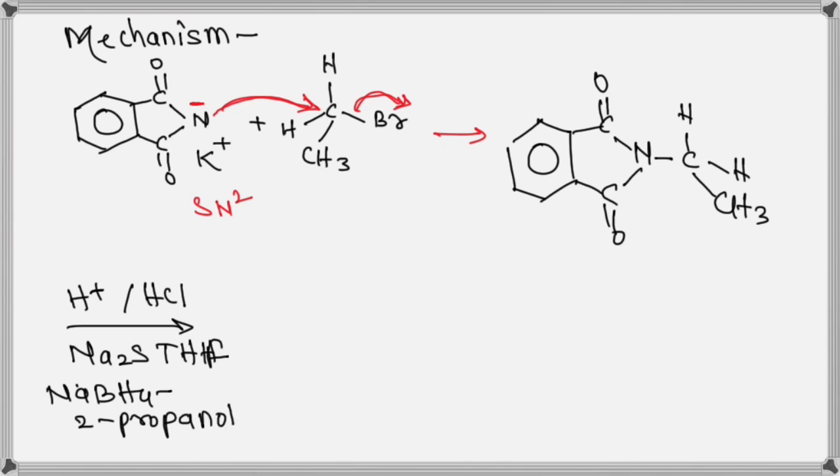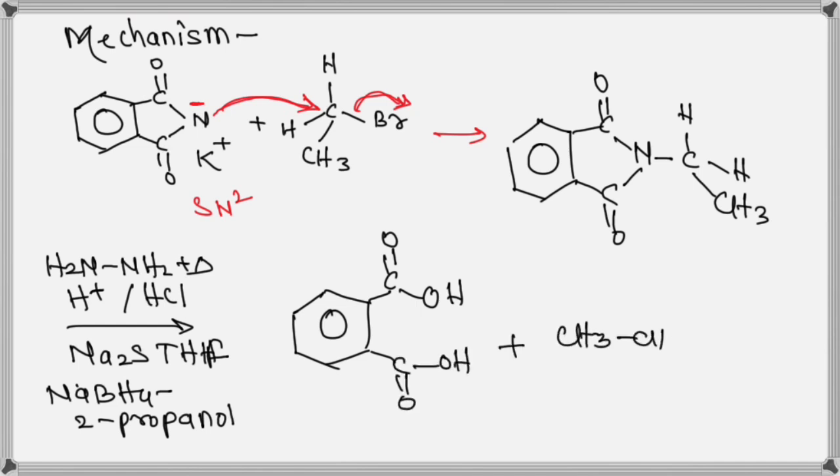Or by treatment with hydrazine NH2 and heat will produce phthalimide or phthalic acid and primary amine which is not contaminated with any secondary or tertiary amines.